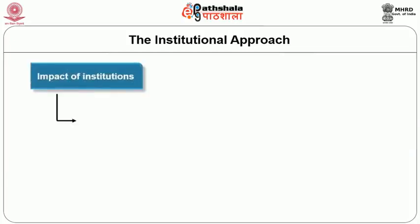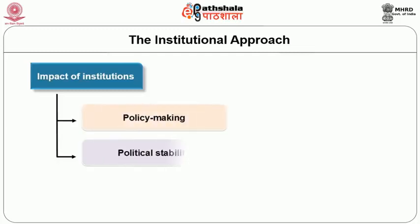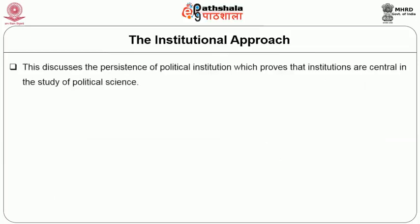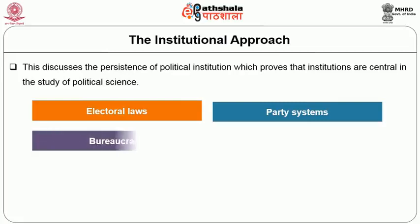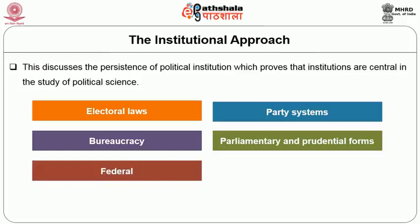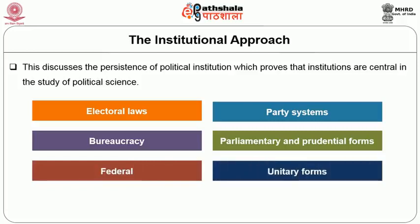The institutional approach thus emphasizes the role of formal institutions and how they have evolved and are organized. The impact of institutions on policy making, policy stability and performance is studied in detail. It studies how individuals come together to make institutions fulfill their needs. The institutional approach discusses the persistence of political institutions, proving that institutions are central in the study of political science. It also includes electoral laws, party system, bureaucracy, and differences between parliamentary and presidential forms and federal and unitary forms.